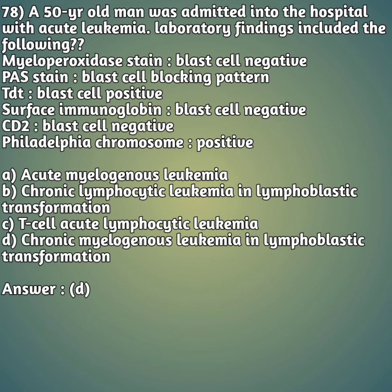Moving on to our 78th question - a case study. A 50-year-old man was admitted with acute leukemia. Laboratory findings: myeloperoxidase stain - blast cells negative; PAS (periodic acid-Schiff) stain - blast cells demonstrate a block pattern; terminal deoxynucleotidyl transferase (TdT) - blast cells positive; surface immunoglobulin - blast cells negative; CD2 marker - blast cells negative; Philadelphia chromosome - positive. These results are most consistent with: option A: acute myelogenous leukemia. Option B: chronic lymphocytic leukemia in lymphoblastic transformation. Option C: T-cell acute lymphocytic leukemia. Option D: chronic myelogenous leukemia in lymphoblastic transformation.